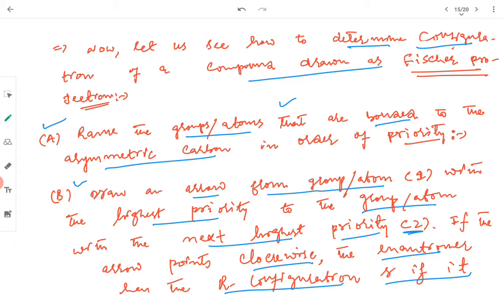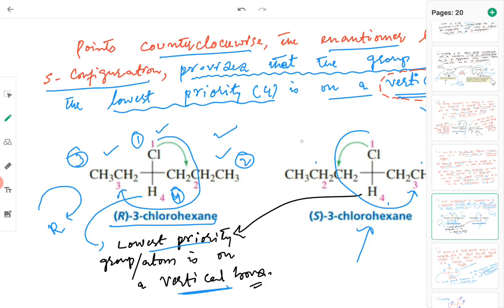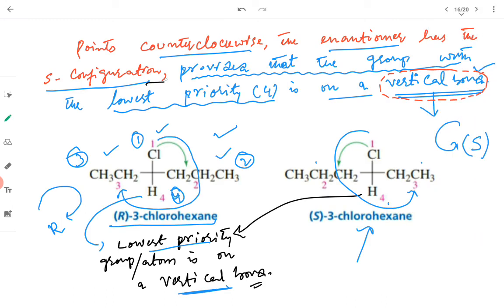When the compound is in a Fischer projection formula, the same procedure applies. Rank the atoms or groups bonded to the asymmetric carbon. Draw an arrow from the highest to second highest to third highest priority. If the arrow points clockwise, it is R; if counterclockwise, it is S — provided that the group with the lowest priority is on a vertical bond. For example, in R-3-chlorohexane, hydrogen is on a vertical bond, so the direct arrow method applies.